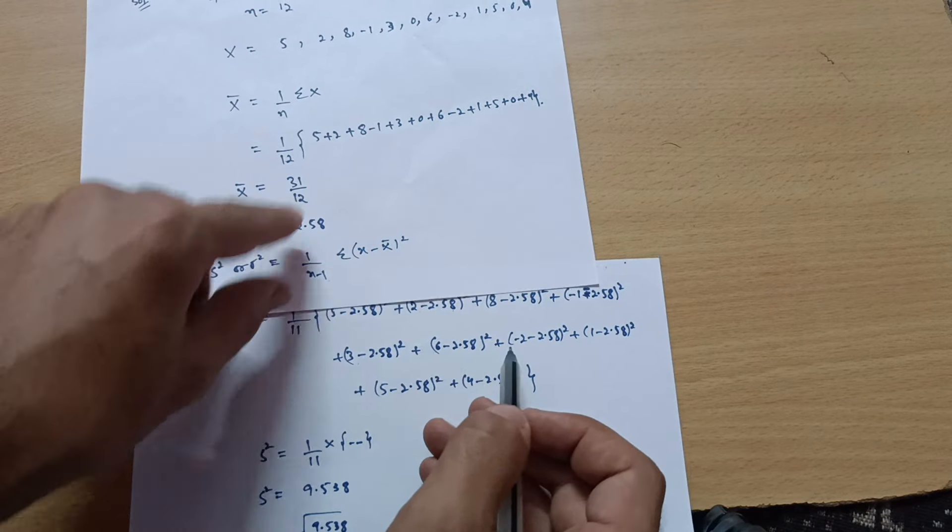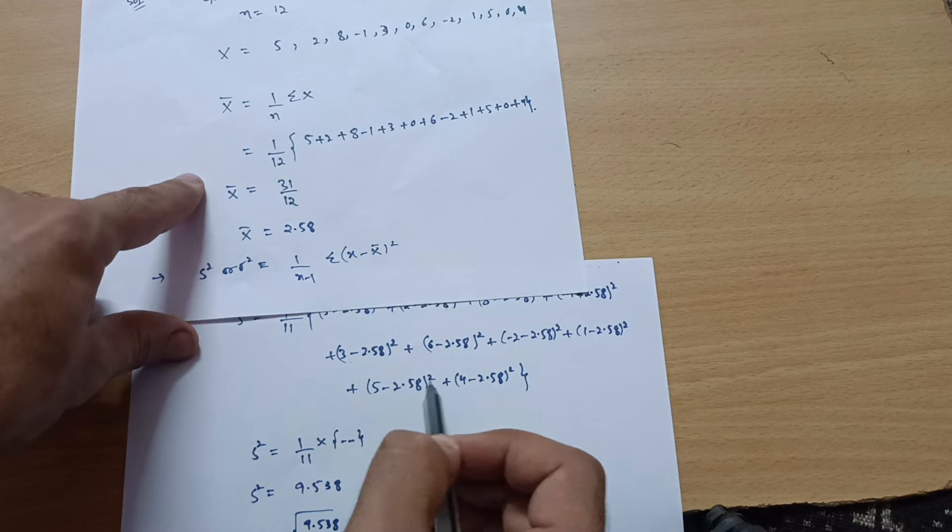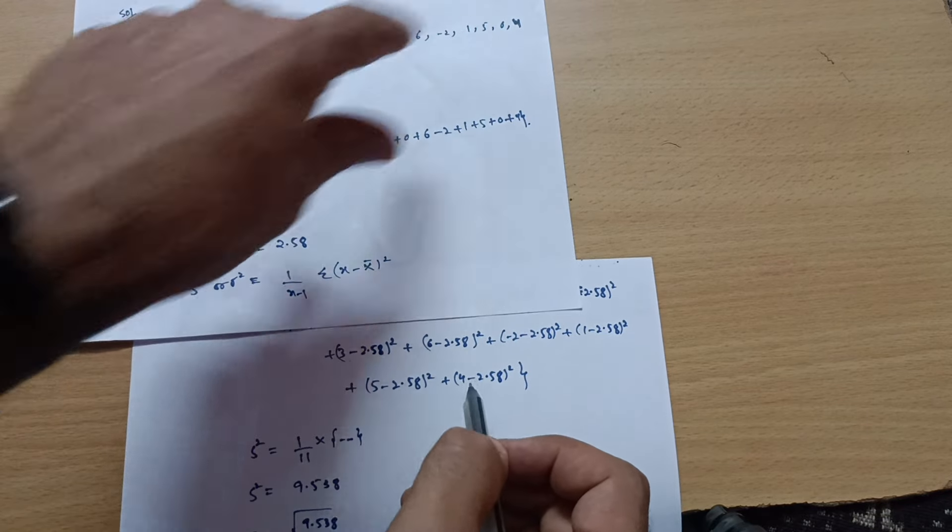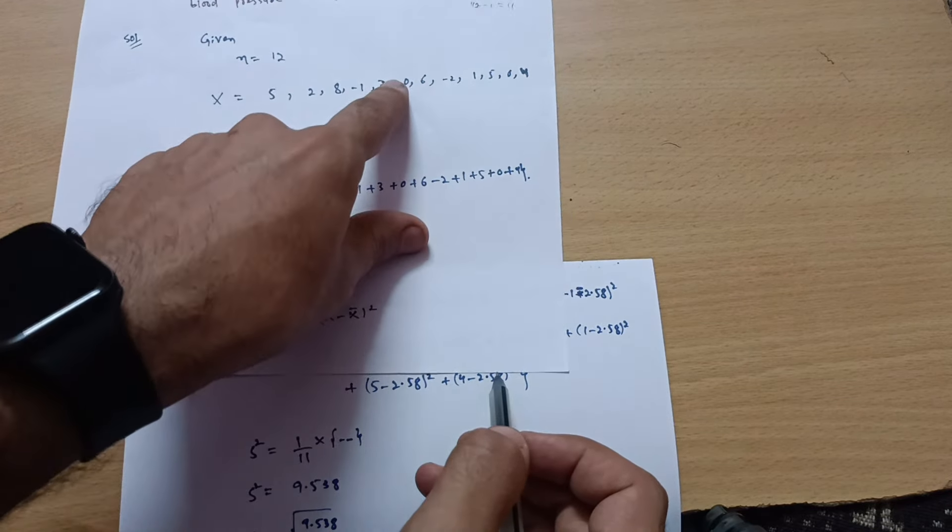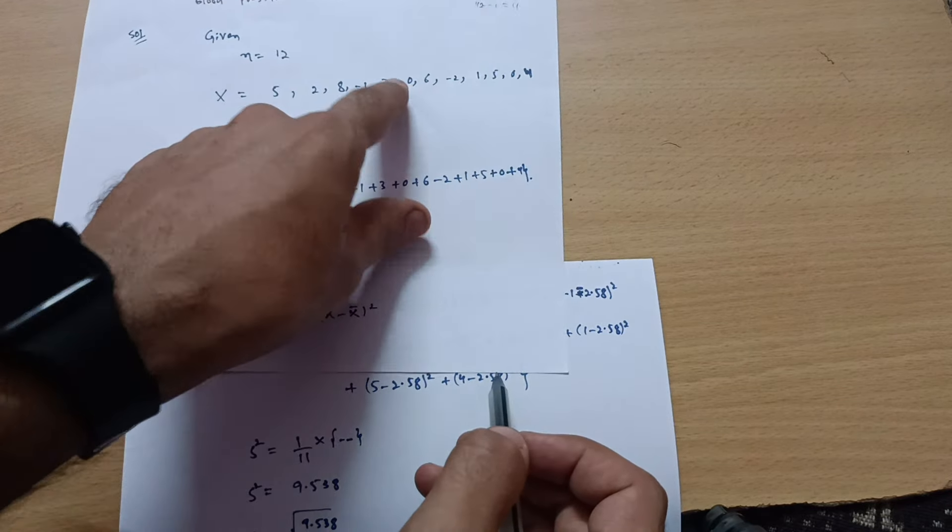So, 1 minus 2.58 whole square, then this 5, so 5 minus 2.58, then at last 4 minus 2.58. These 0's I am not considering. So 0 minus 2—sorry, I have missed 2 terms over here—that is your 0 minus 2.58 whole square plus this again another 0 is there, 0 minus 2.58 whole square.